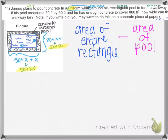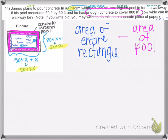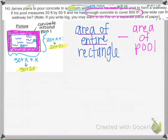Now we need to think about what we're finding. We want to pour concrete around the pool, and we're told that area is 800 square feet. The walkway isn't its own rectangle, but it is part of a rectangle. If we take the whole outer rectangle and subtract out the pool, we're left with just the walkway. So we need to find the area of the entire rectangle and subtract the pool.